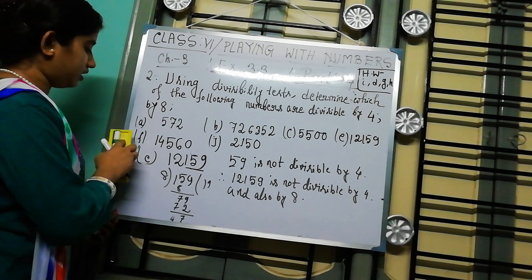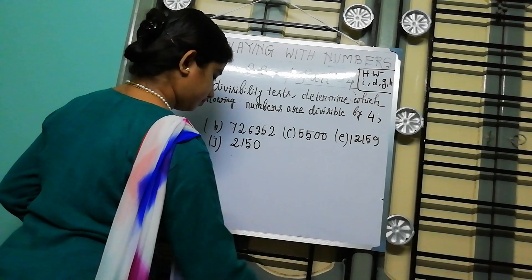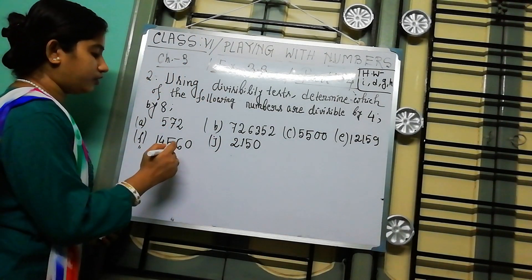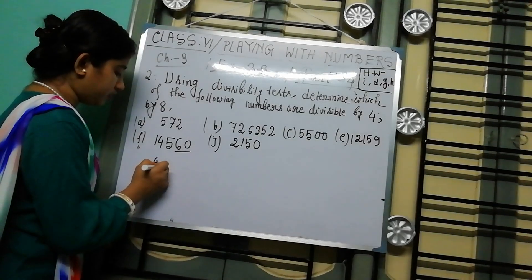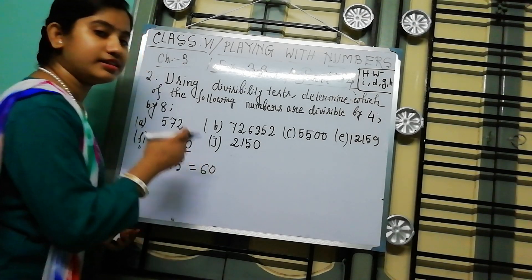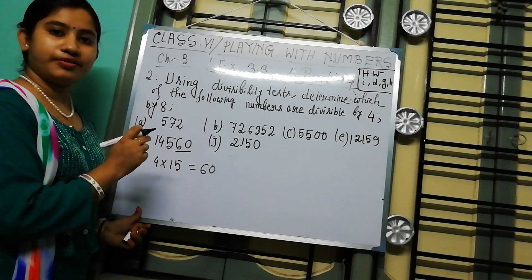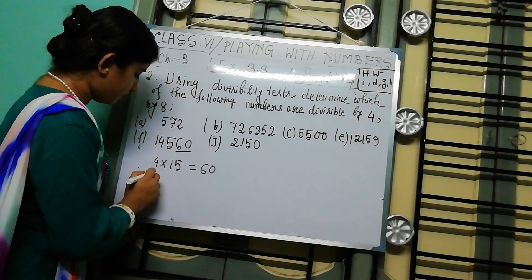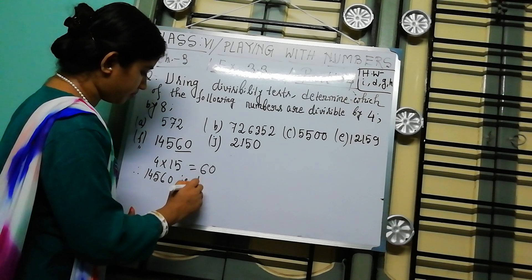Now next, number F. The number is 14560. For divisibility by 4, we take the last 2 digits: 60. We know that 4 × 15 = 60, so 60 is a multiple of 4 and is divisible by 4. Therefore the whole number 14560 is divisible by 4.